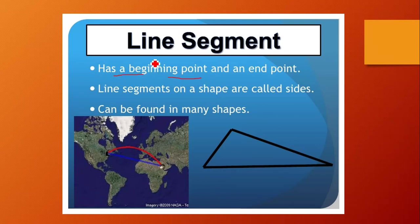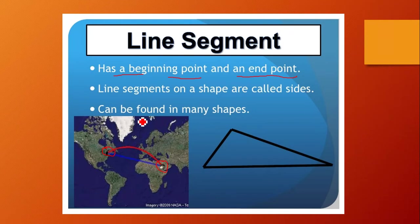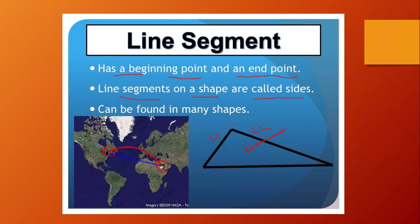A line segment has a beginning point and an ending point. Here, this is the beginning and this is the ending. Line segments on a shape are called sides. Using three line segments in this figure forms a shape, and this particular shape is called a solid.